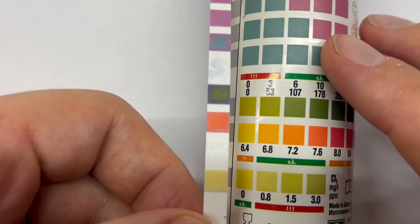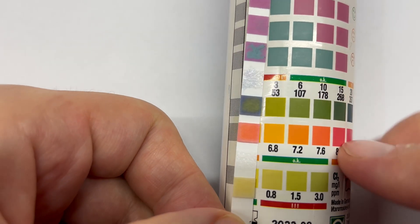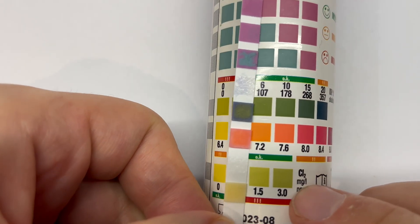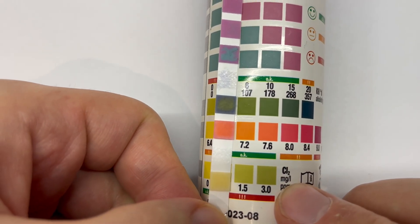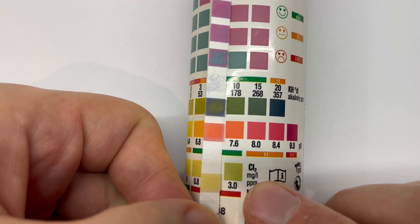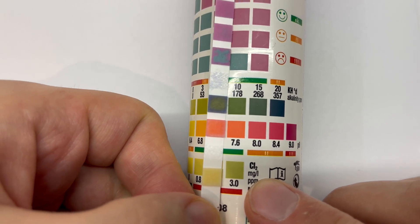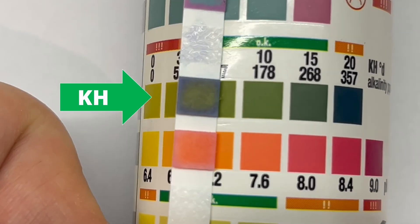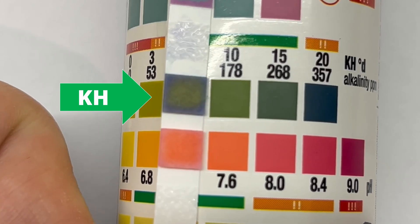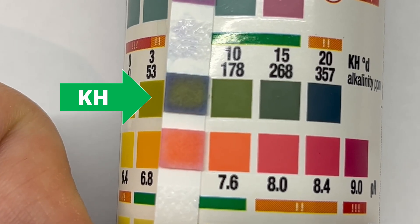To measure KH we can use very similar methods as before. So let's quickly start with those measuring stripes. Unfortunately, this time the problems with accuracy are even higher. Not only because you have big jumps in the numbers.